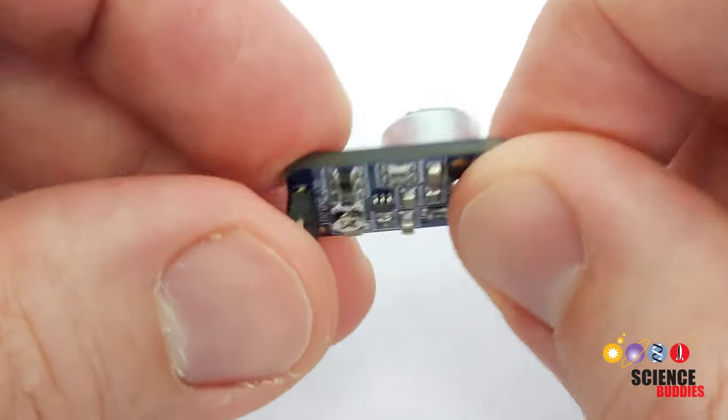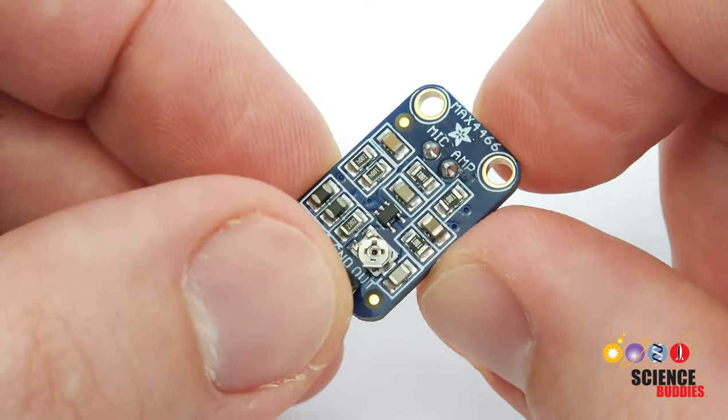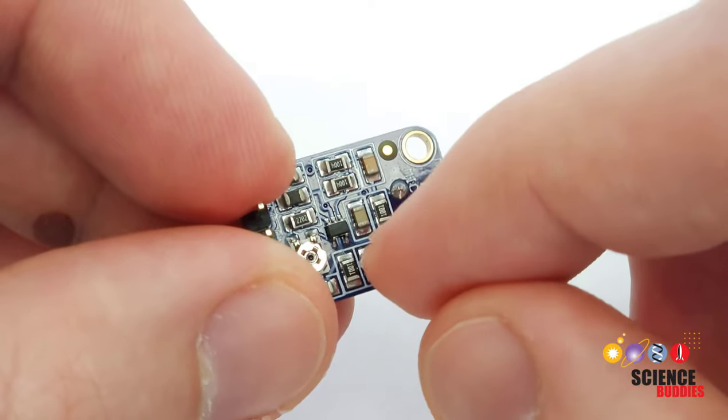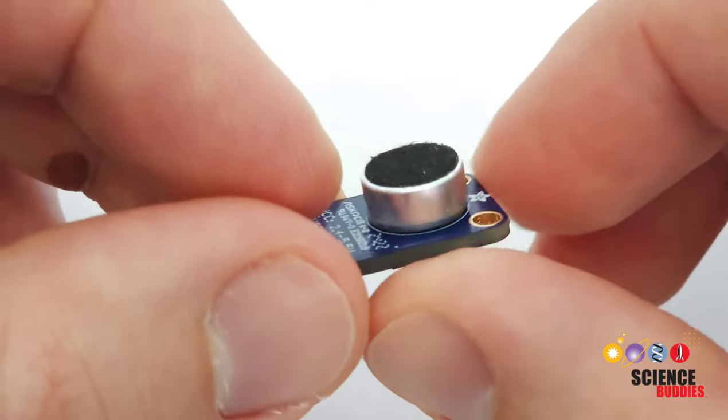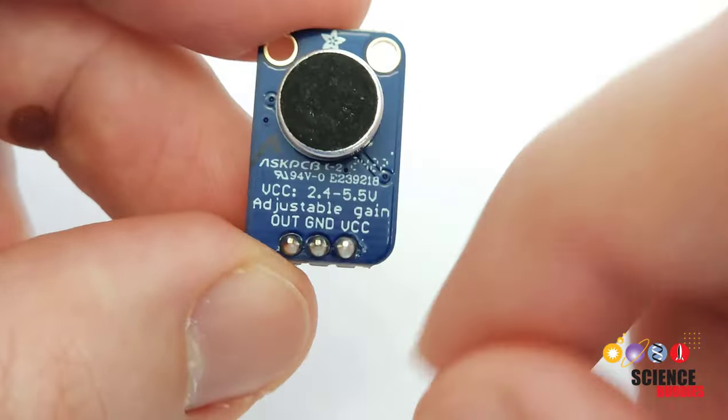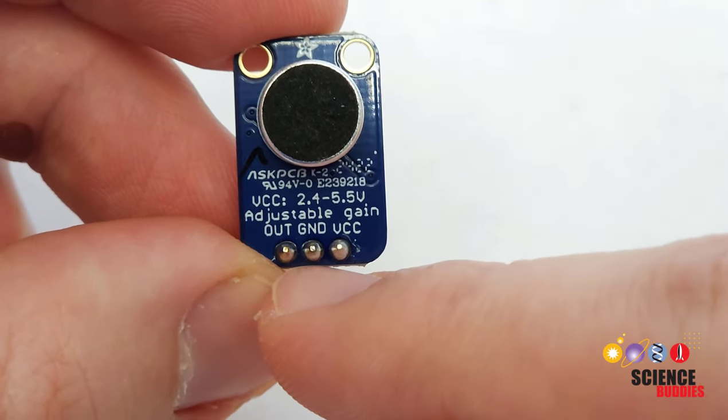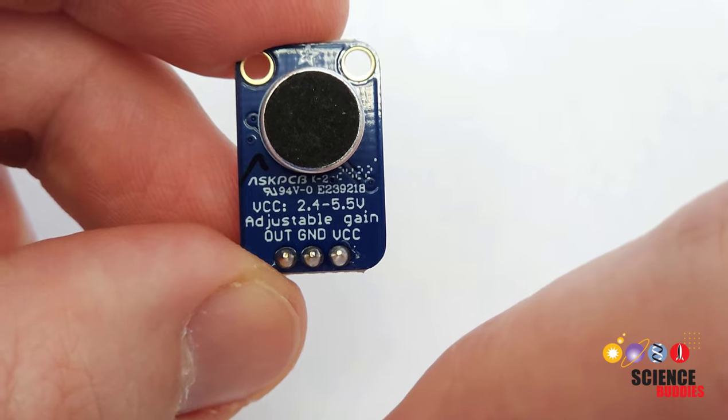That's why you will usually want to use these with an amplifier board like the one here that the microphone is mounted on. This contains some additional circuitry to amplify the voltage to a level that can easily be read by the Arduino, and then you just need three connections: voltage supply, ground, and the analog out signal to the Arduino.